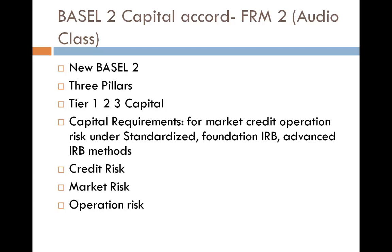Tier 2 capital, or supplemental capital, is comprised of other assets of a liquidity or equity-like nature, such as cumulative preferred stock. These may be able to protect depositors with charges against future income or have a limited lifetime. Tier 2 capital includes items such as undisclosed reserves, revaluation reserves, general provisions, hybrid debt, and subordinated term debt. These resources are not as certain as Tier 1 capital.